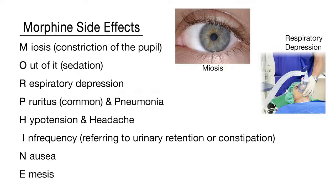First, let's take a look at the side effects of morphine. Morphine is an opioid analgesic or narcotic used to treat moderate to severe pain. It has several side effects and can cause addiction, overdose, or death if misused. Remember the following common side effects of morphine: miosis or constriction of the pupil, out-of-it or sedation, respiratory depression, pruritus which is common, and amnesia, hypotension, and headache.